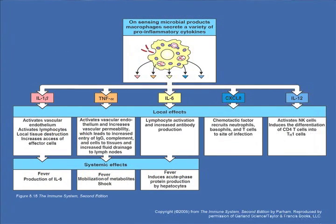Here we have a macrophage covered by these pattern recognition receptors. Once triggered, we can see a number of different biologic activities that can result. We have inflammatory cytokines such as IL-1 and TNF, which do all the things that inflammation does: fever, changing endothelial surfaces, leukocyte trafficking. IL-6 is the prime generator of the acute phase reaction. It can also affect chemokine expression, which affects the trafficking of cells. And things like IL-12 can trigger, in the adaptive immune response, a Th1 response. We'll hear a lot more about this as we go along.